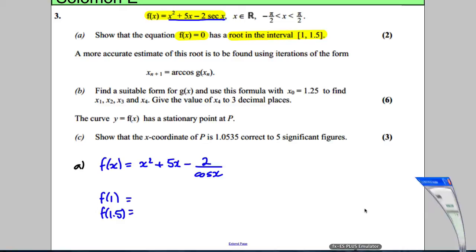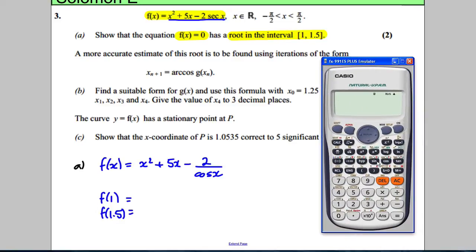Okay so we get our calculator out and I'm going to type in algebraically I'm going to say x squared add 5x subtract 2 over cosine of x. Don't forget to close that bracket there in the cosine of x. And I'm going to calculate that at x is 1.